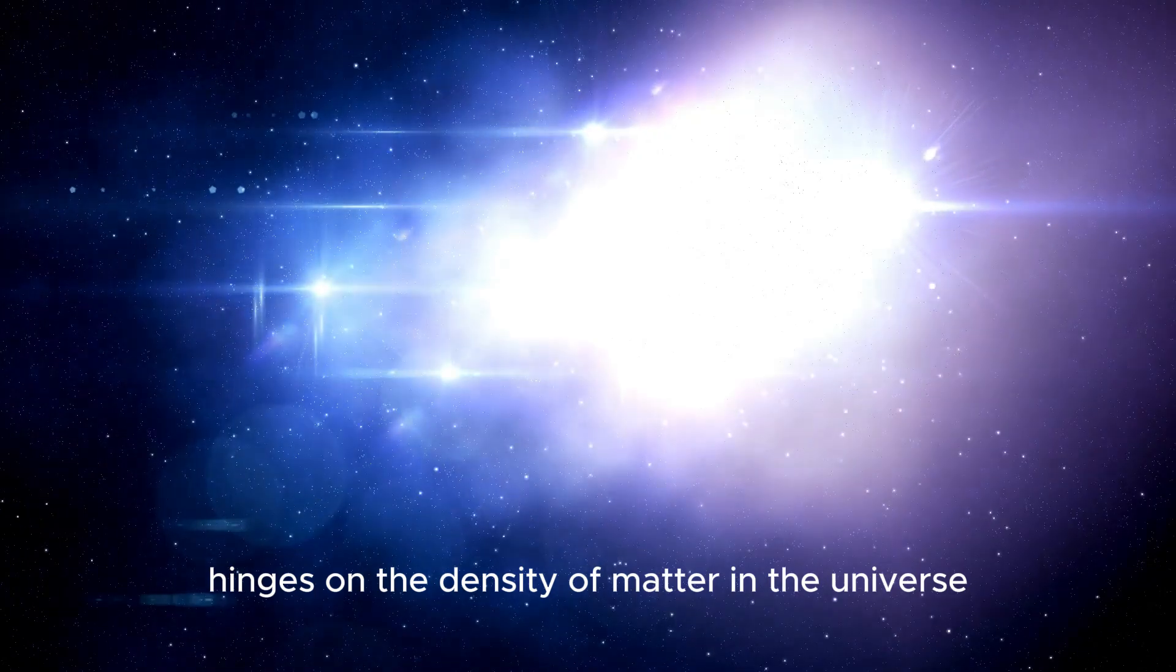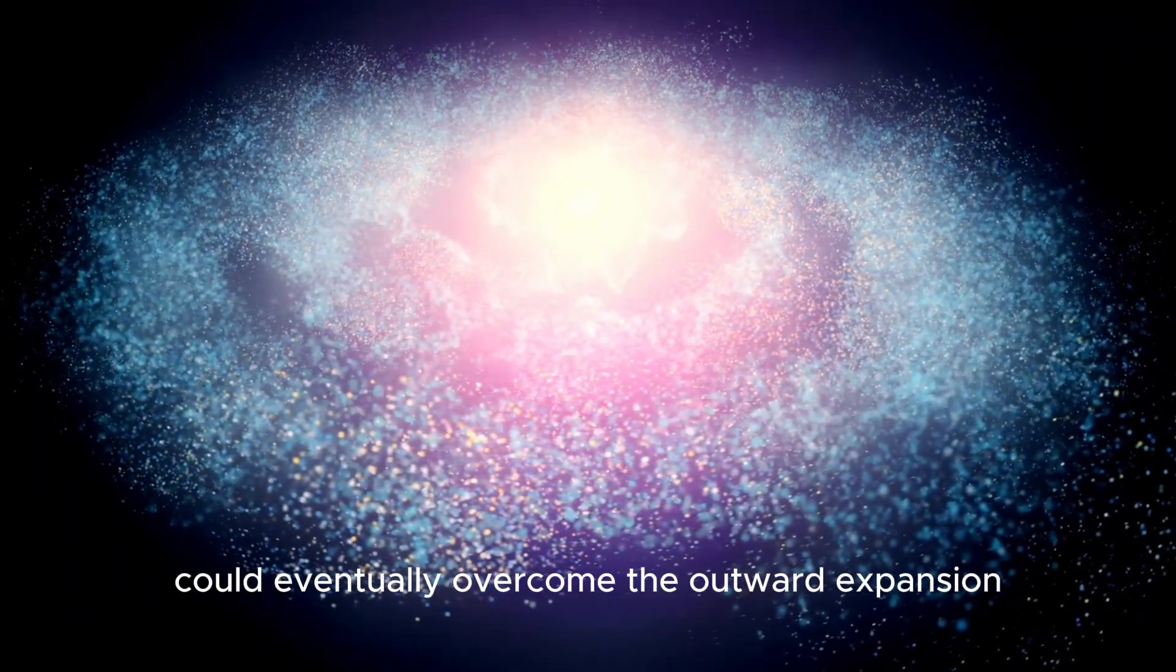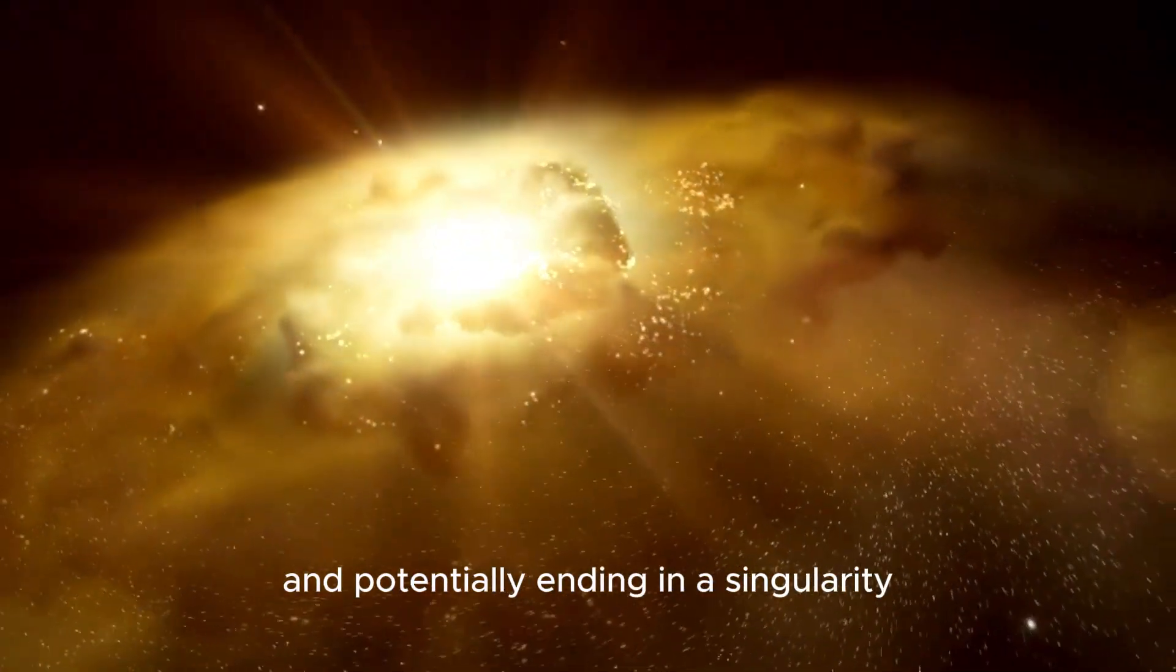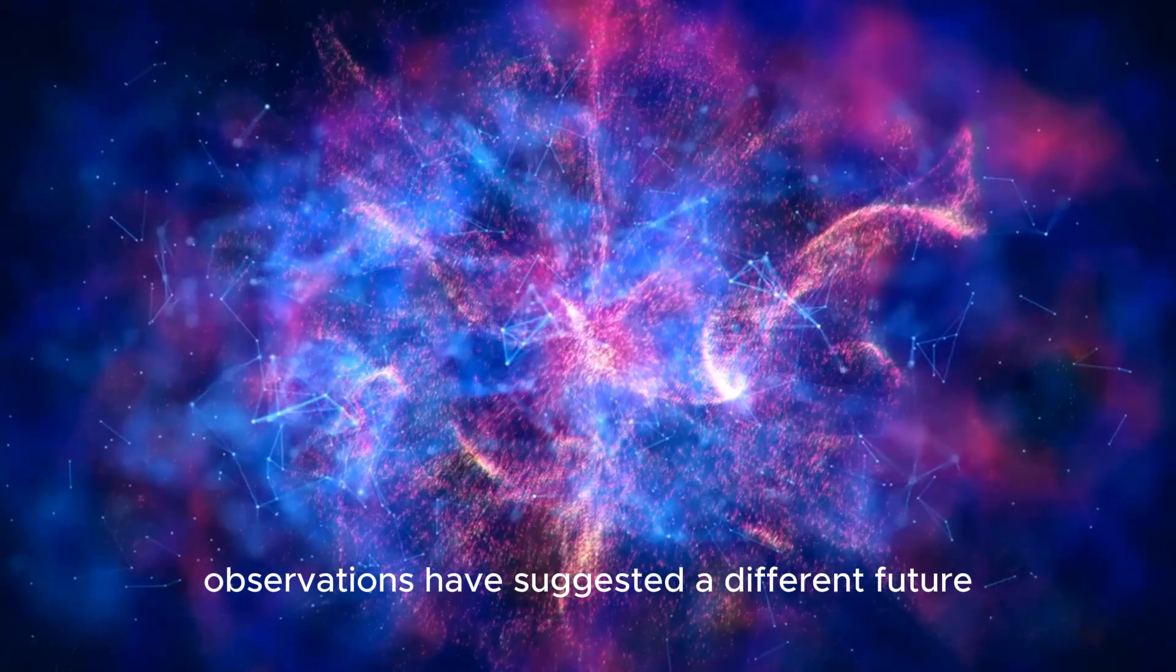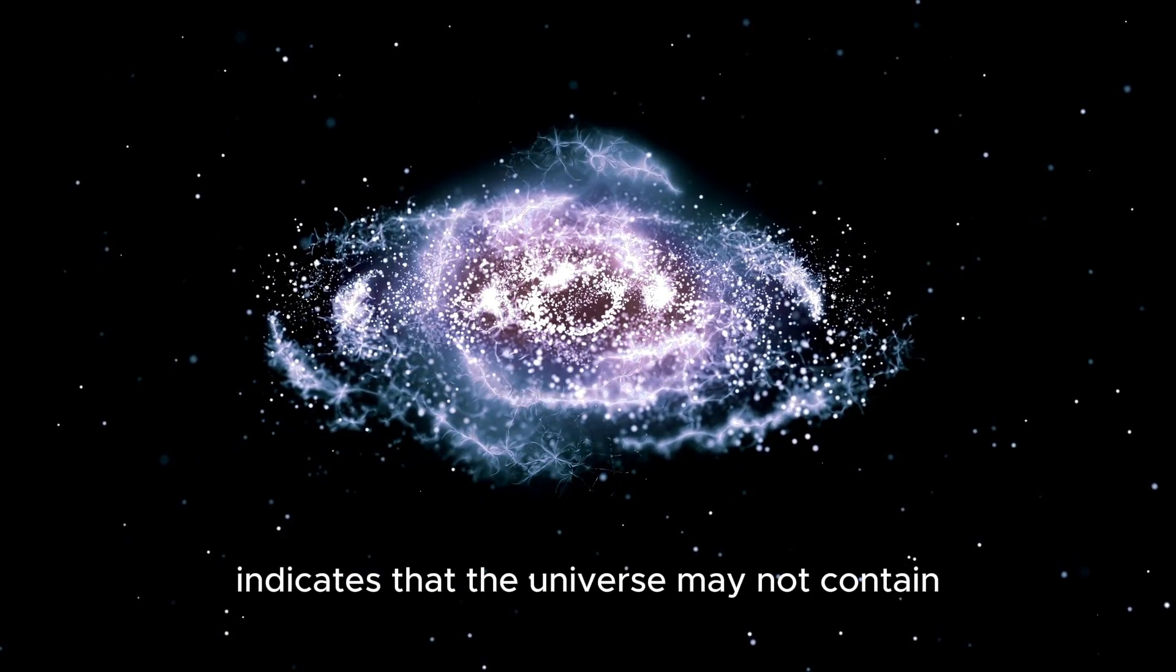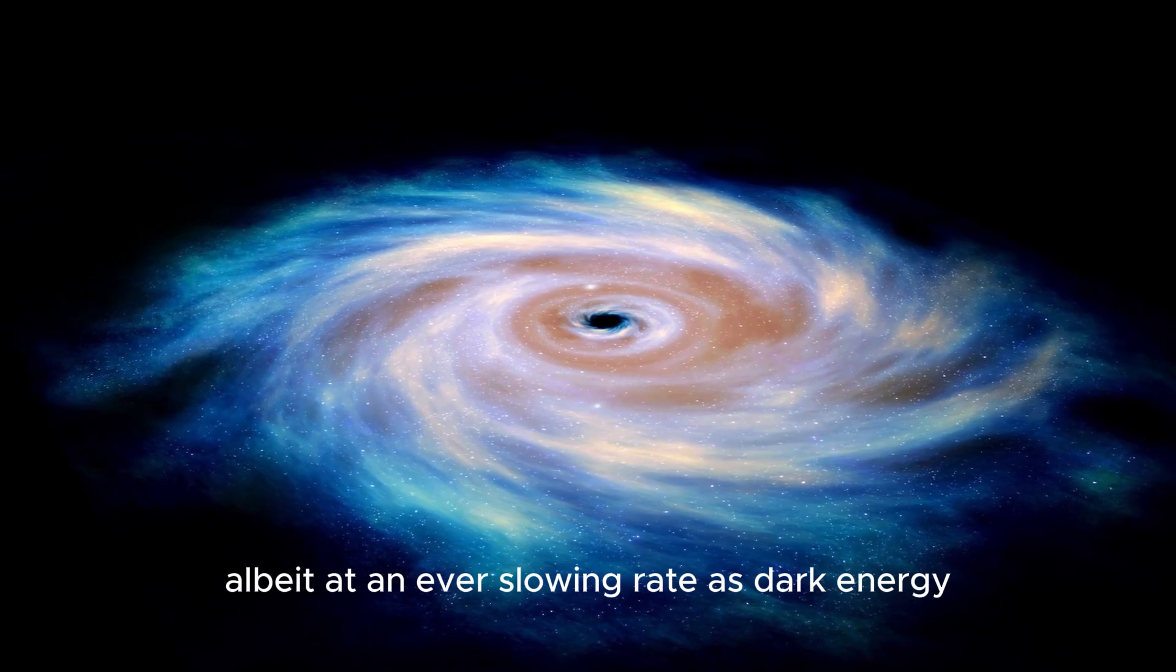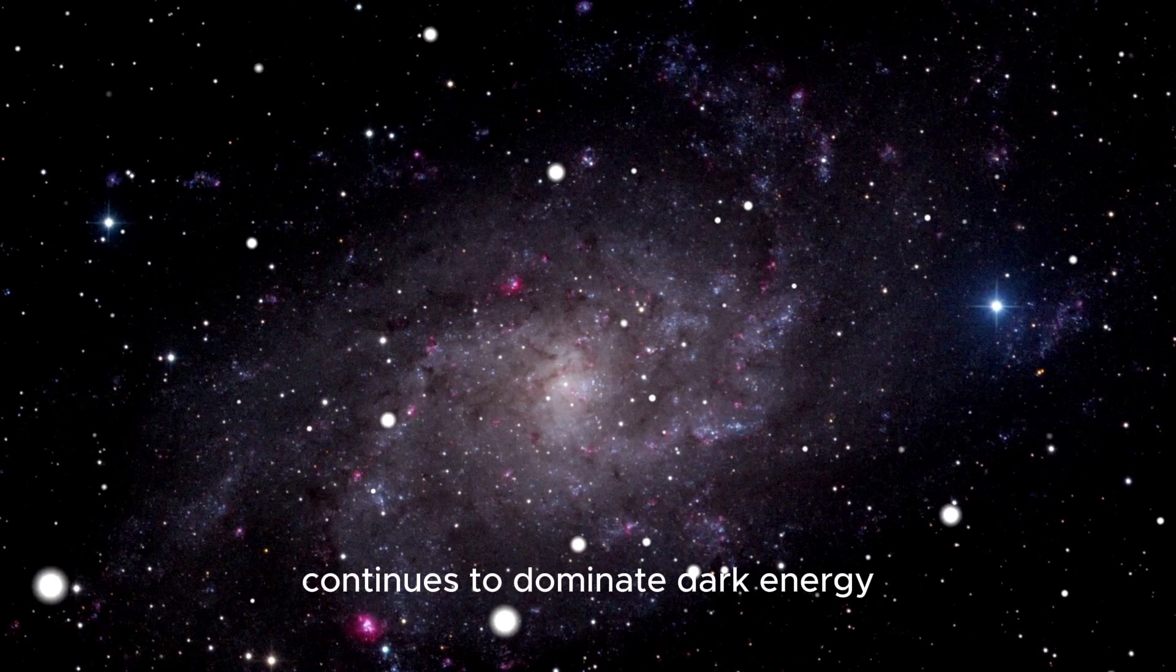The idea of a Big Crunch hinges on the density of matter in the universe. If there is enough matter, the gravitational pull of all objects in the cosmos could eventually overcome the outward expansion driven by the Big Bang. This scenario would lead to a contraction of the universe, culminating in a reverse of the cosmic expansion and potentially ending in a singularity similar to the Big Bang itself. However, recent observations have suggested a different future for the universe. Data from the Planck satellite, which mapped the CMB with unprecedented precision, indicates that the universe may not contain enough matter to halt its expansion and initiate a Big Crunch. Instead, the universe's fate might be one of eternal expansion, albeit at an ever-slowing rate, as dark energy, a mysterious force driving the universe's accelerated expansion continues to dominate.